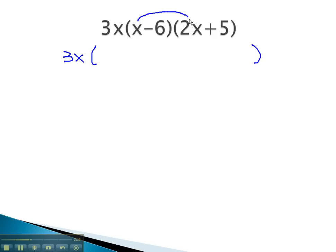As we do, we distribute the x through to get 2x squared plus 5x. Distribute the negative 6 through to get negative 12x, minus 30. Again, we can simplify inside those parentheses by combining the like terms in the middle.